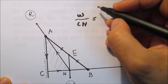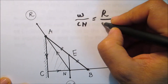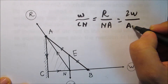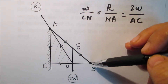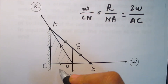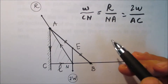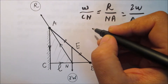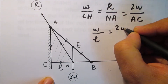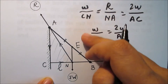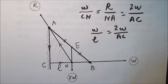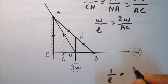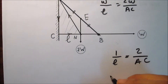So we have: w over CN equals R over NA equals 2w over AC. We are not given any length of the rod, so assume CN to be l. Then w over l equals 2w over AC. Simplify by dividing both sides by w to get 1 over l equals 2 over AC, then cross-multiply to find AC in terms of l.